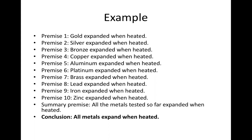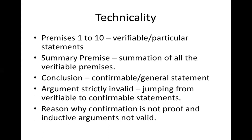You can never really be sure that the conclusion is correct, because tomorrow you could find a metal that doesn't expand when heated. In fact, such metals were discovered — some metals do not expand when heated; we call them superconductors, which don't absorb heat and so don't expand. So all the premises are true but the conclusion is false. Premises one to ten are verifiable or particular statements, but the conclusion is a confirmable or general statement. The argument is strictly invalid because it amounts to jumping from verifiable to confirmable statements — that's why confirmation is not proof and inductive arguments are not valid.